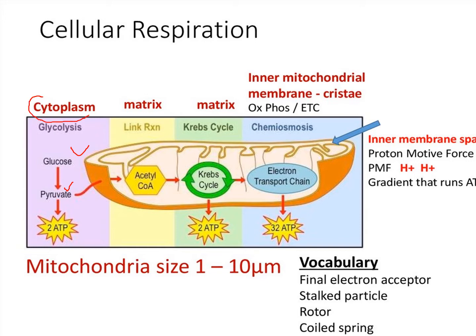Glycolysis takes place inside the cell, in the cytoplasm. The Krebs cycle and the electron transport chain also take place inside the cell, but they occur inside the mitochondria. Glycolysis, however, takes place outside the mitochondria, in the cytoplasm.